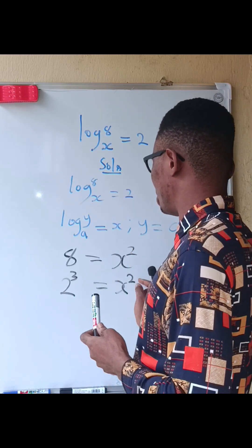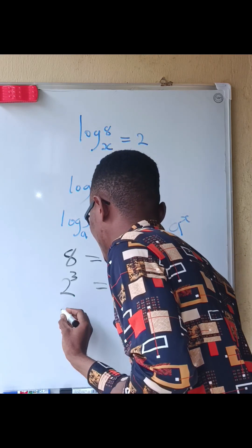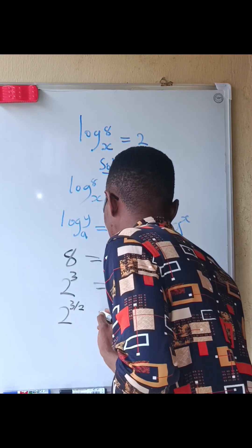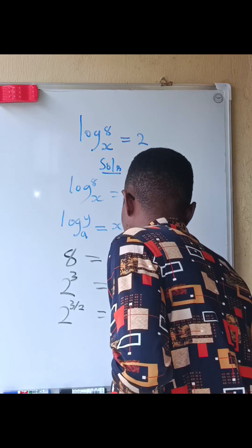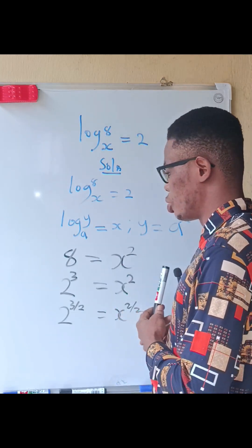So we have 2 power 3 divided by 2 equals x power 2 divided by 2. Remember that 2 divided by 2 is going to give you 1, so x power 1 gives you x.